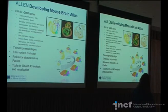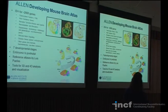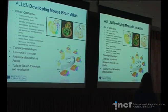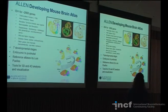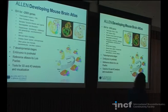In the earliest stages, the brain is still encased in the body because it is not formed enough to be taken out. We get up to E18.5 where we can then remove the brain, so these first three stages are still in the body. It goes from embryonic day 11.5 all the way through to P56, which is our adult reference atlas mouse.